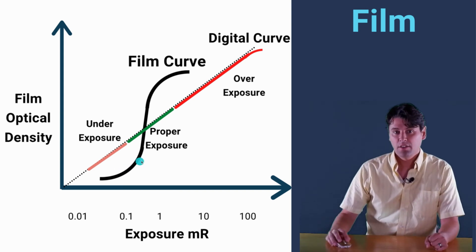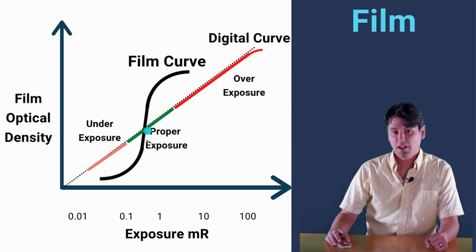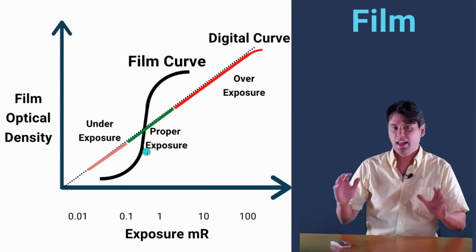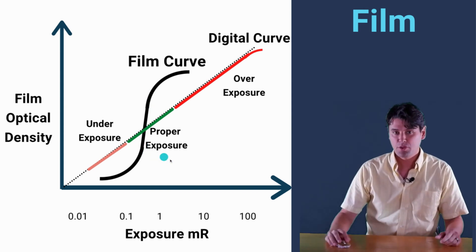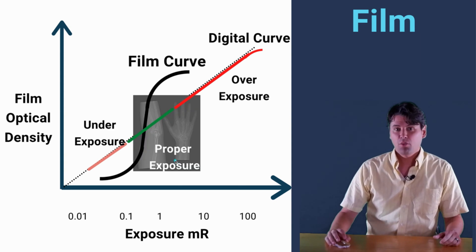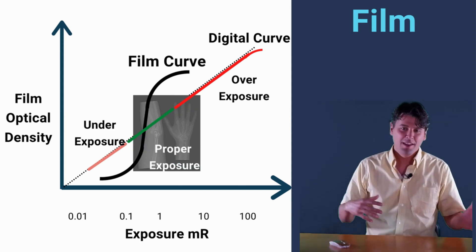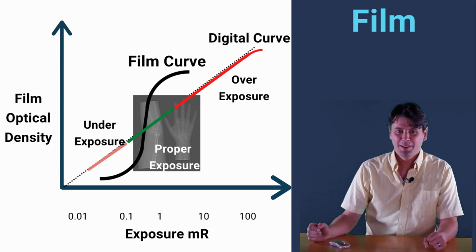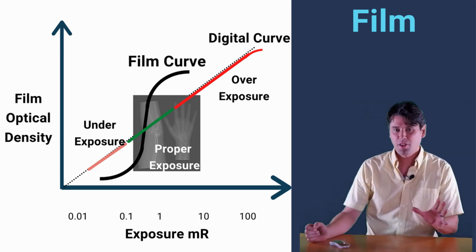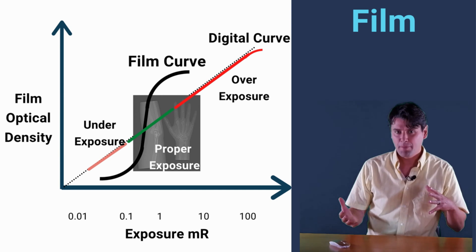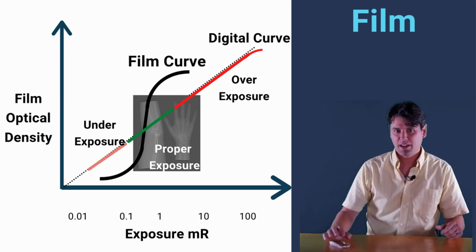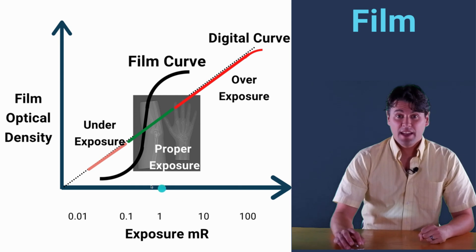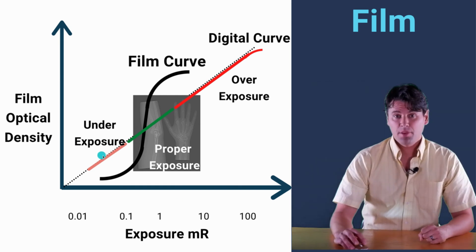The idea here is there's a region where film is nice and well-behaved, and if you have an exposure in that region you're going to get a good, proper exposure. We show that here where we have a hand and an arm that are properly exposed, so you can see the bones within them but nothing is saturated. Then in this region there's actually not enough x-rays for the film to be properly exposed.